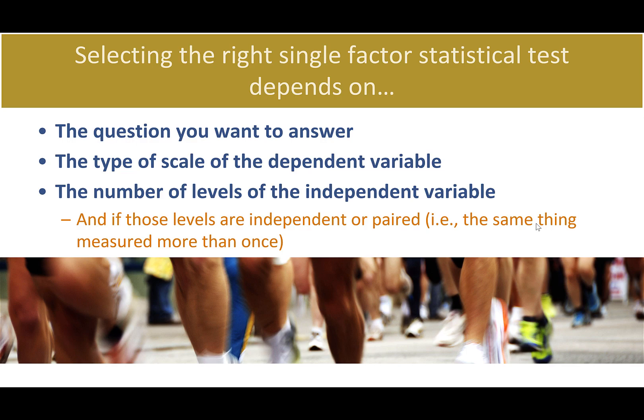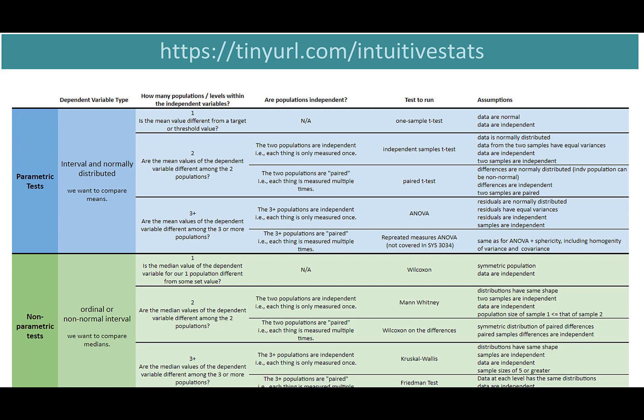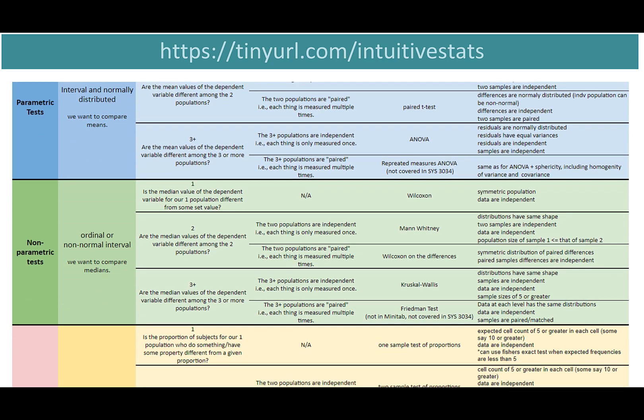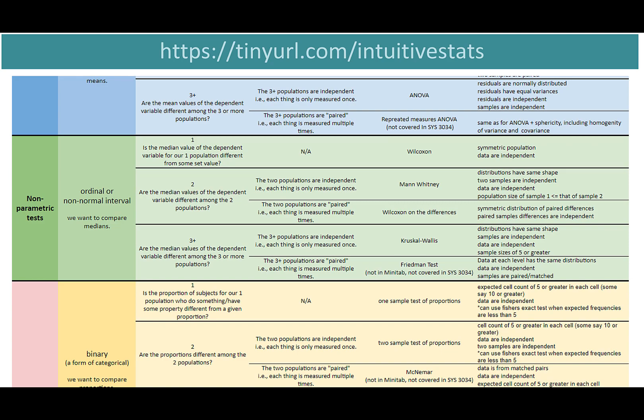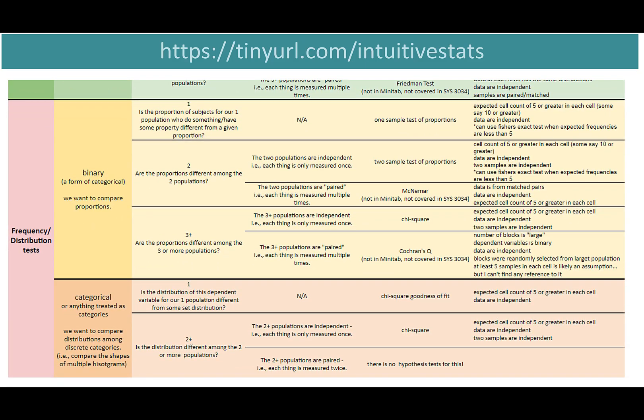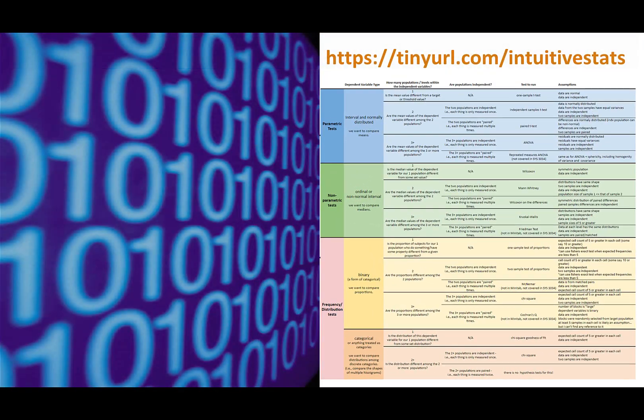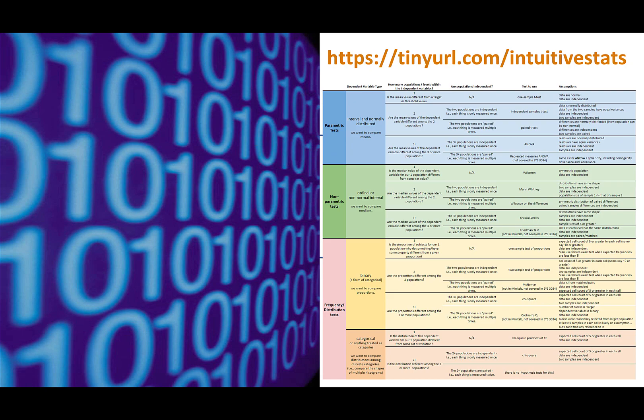Finally, consider whether the independent variable levels are paired — are you measuring the same thing more than once, like in the case of a paired t-test? Or is everything being measured once, as is the case for most other tests? That is a ton to remember, which is why we have the statistical test selection guide at the URL shown above. It has not only what we've already covered, but also additional information such as the assumptions of each test. We do cover those in some other videos, and we give a summary of them here on this table. Now you've got all you need to know which test to select for single factor statistics.